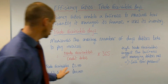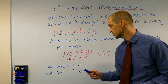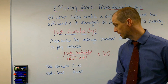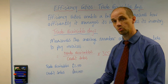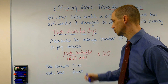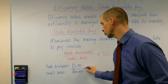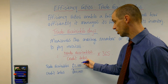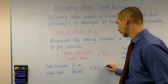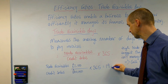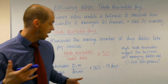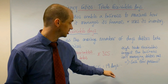In this example, we have trade receivables of £2,100 and credit sales totalling £40,000 for the year. We divide 2,100 by 40,000 and multiply by 365, which gives us approximately 19 days. So on average, debtors are taking 19 days to pay.